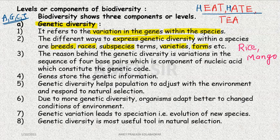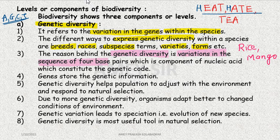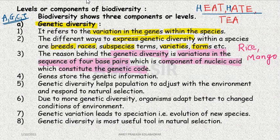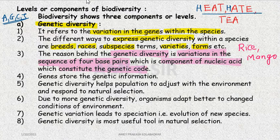The reason behind genetic diversity is that there are variations in the sequence of four base pairs, which are components of nucleic acid and that constitute the genetic code. This is why the protein is expressed differently, and the characters that emerge are also of different types.